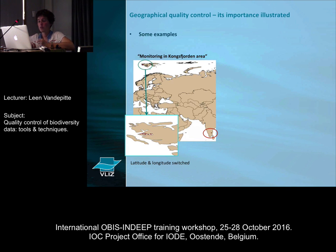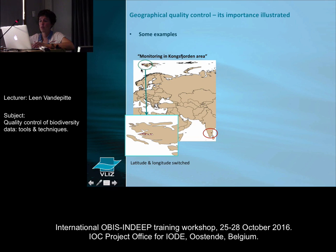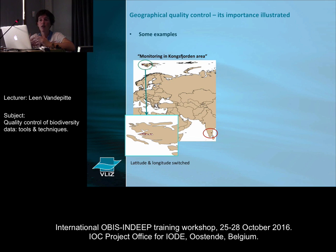Some examples — real datasets that we received. This dataset is called 'Monitoring in the Kongsfjorden area', which looks pretty good, and then all of a sudden there's a little point way off where it doesn't belong. What happened is very simple: latitude and longitude for that specific record got switched by accident. If you plot this and visually see this, that's very easy to catch and very easy to correct.